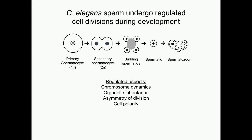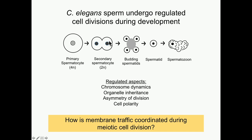However, as I was investigating some trafficking proteins in this context — science being science — I actually discovered one that functions much earlier in the process. Because there's not a lot known about how membrane trafficking is coordinated during meiotic divisions, I decided to use this gene, 6-7, as a tool to understand this process a little bit better.